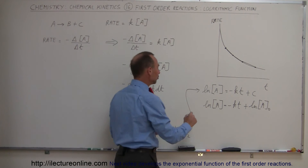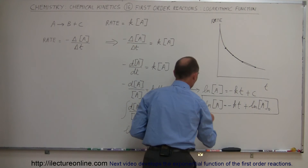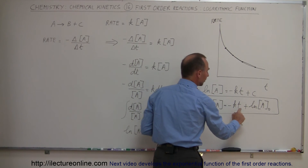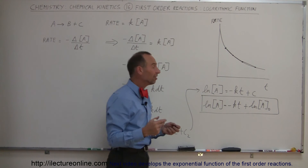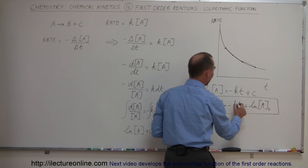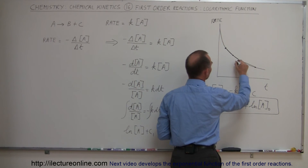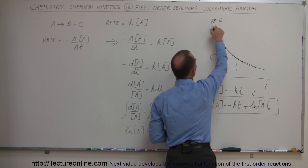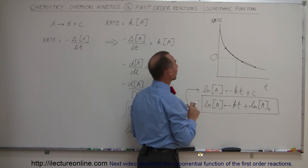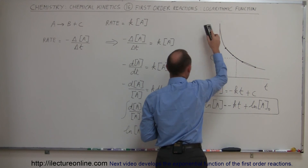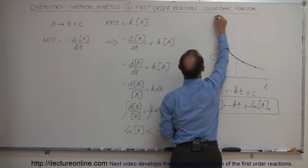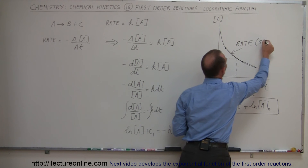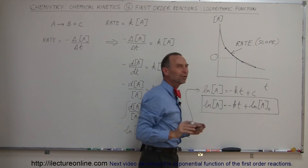We now have an equation relating the concentration of A to its initial concentration and the time elapsed since the reaction began. At any point in time, we plug in T and can read off the concentration of A. A quick correction: the equation gives the concentration of A, not the rate — the rate is actually the slope of that curve. So this equation gives concentration as a function of time.